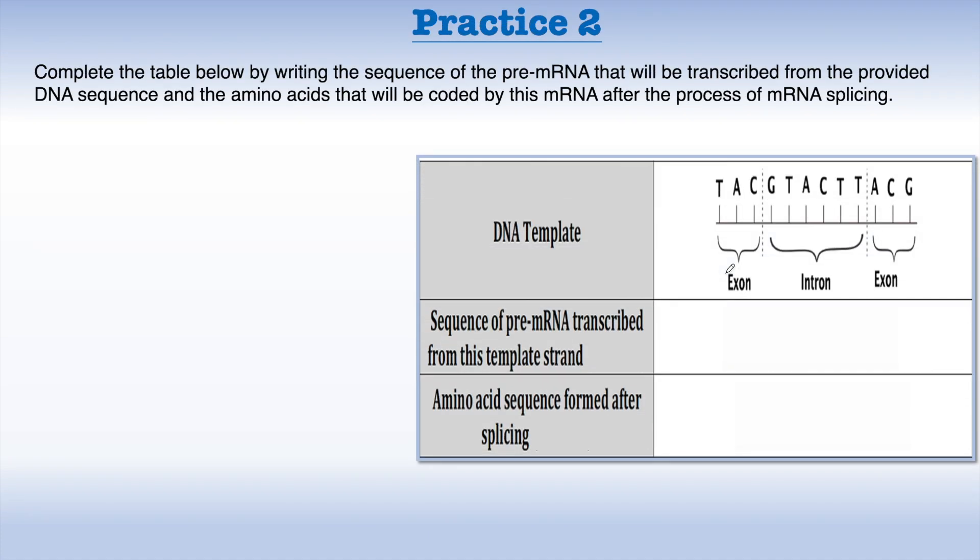The second practice: complete the table below by writing the sequence of the pre-messenger RNA that will be transcribed from the provided DNA sequence and the amino acids that will be coded by this messenger RNA after the process of messenger RNA splicing. Here we go, we have exons and introns. We understand that introns are non-coding, so we will not bring amino acids to this part. Let's start. Let's write the sequence. I will write the exons with a red and I'll search for another color for introns. So thymine all the time with adenine, adenine with uracil, cytosine with guanine.